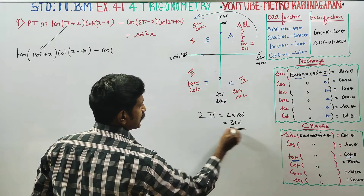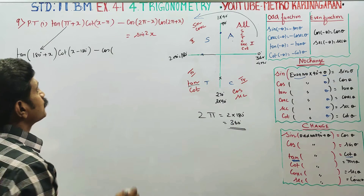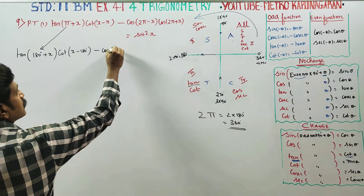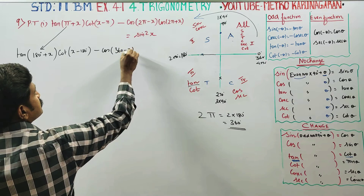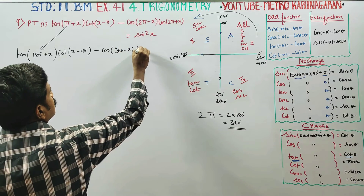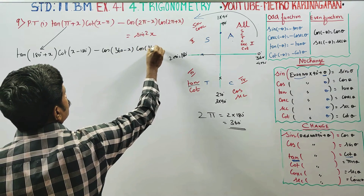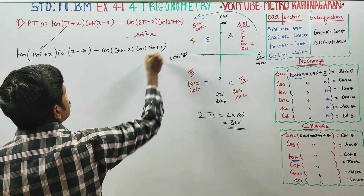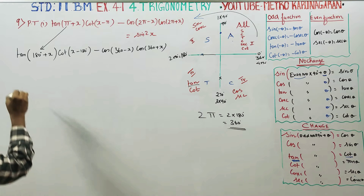cos 2pi, 332 minus x. cos(332 minus x). LHS — start making the next stage.